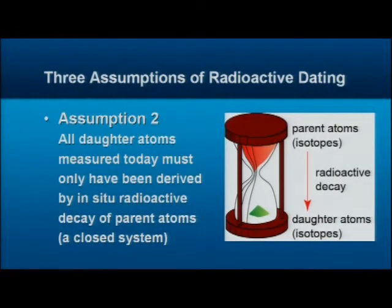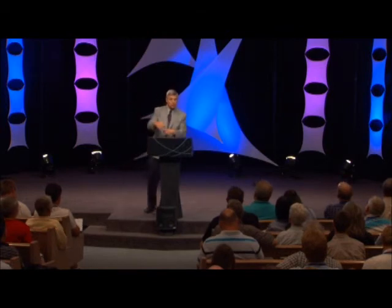Secondly, you have to assume that all the daughter atoms measured in the rock today have only been derived by radioactive decay from the parent atoms in that rock. In other words, it must be a closed system — no contamination. What if in the supposed millions of years, groundwater flowing through the rock added lead or washed away uranium? You could never be sure the rock remained uncontaminated for millions of years.